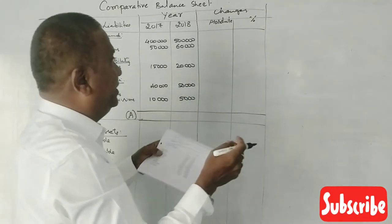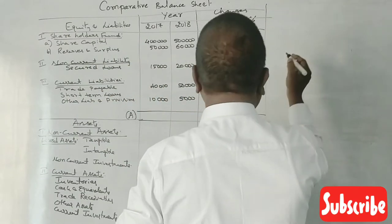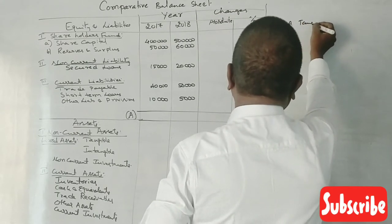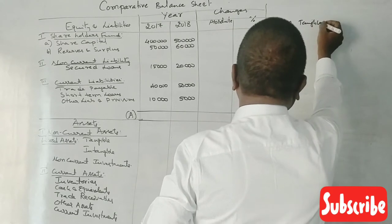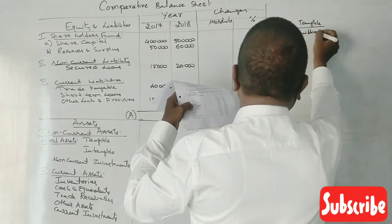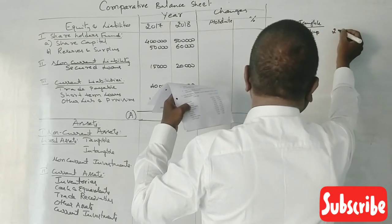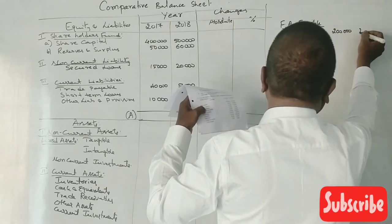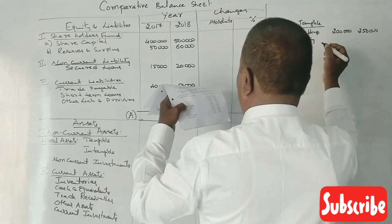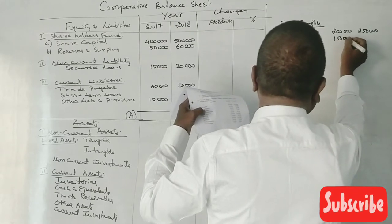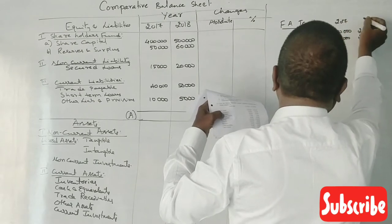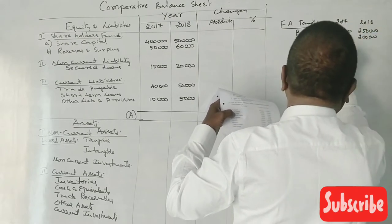Buildings: 2,50,000 in 2017 and 2,50,000 in 2018. Machinery is 1,50,000 in 2017 and 2,00,000 in 2018. This covers the years 2017 and 2018 for the total tangible assets.